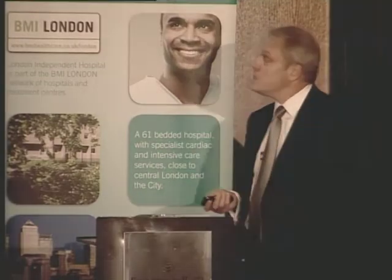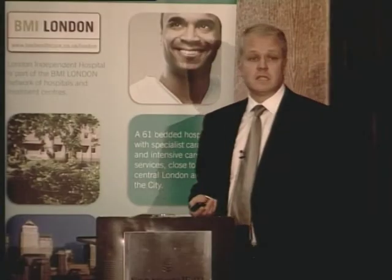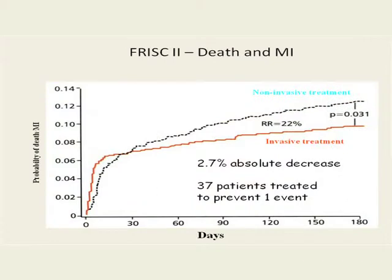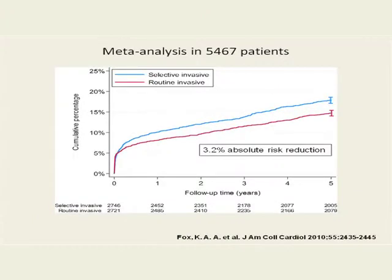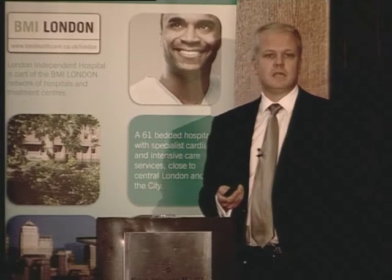I'm first going to talk about revascularization in the bad ones — acute coronary syndrome and ST segment elevation myocardial infarction. The first thing to say in acute coronary syndrome patients is that they need quick angiography and revascularization if they're in the higher risk groups. This trial was one of the first to show it, demonstrating a 3% absolute decrease in risk between patients who had expectant management — angiography and revascularization only if they had further symptoms — against routine angiography and revascularization. And that's revascularization with both PCI and with bypass surgery.